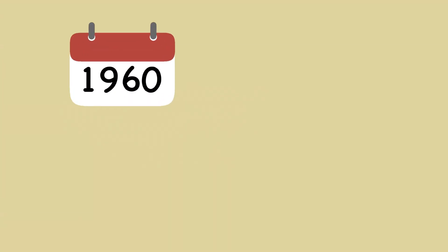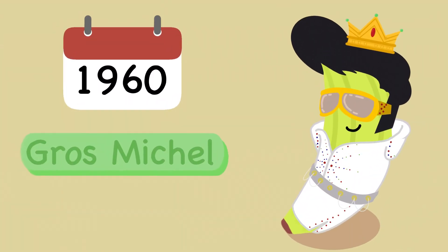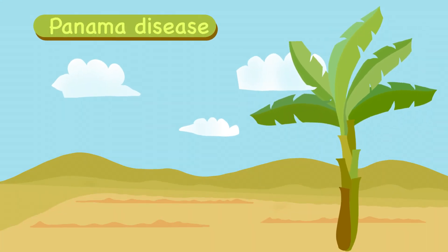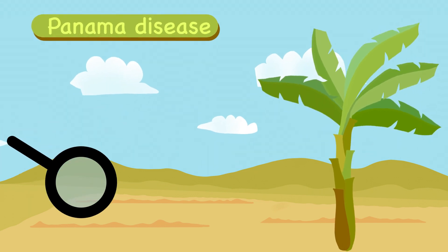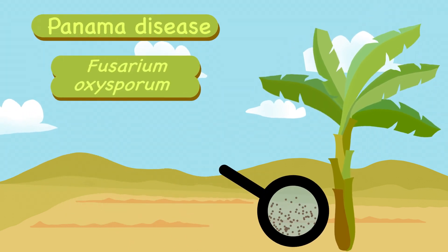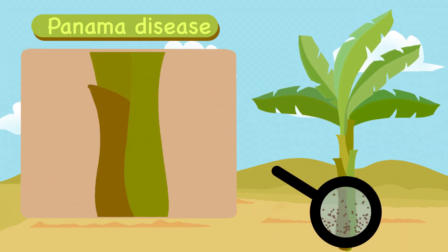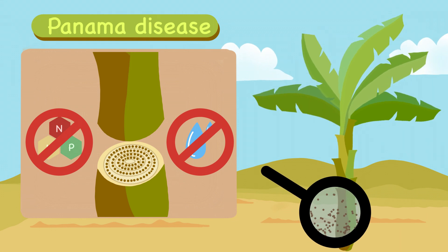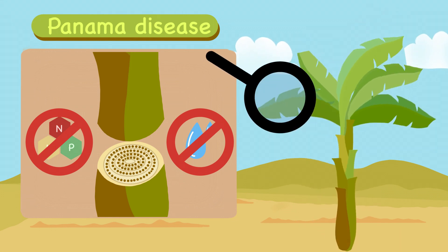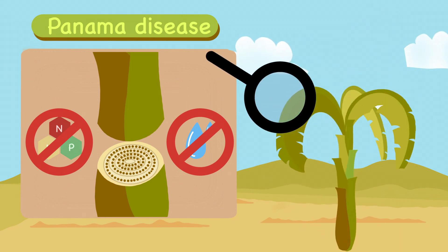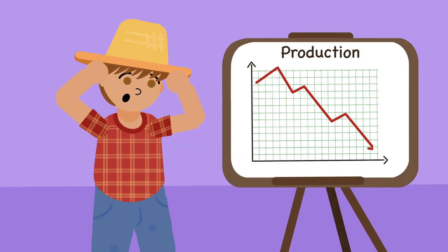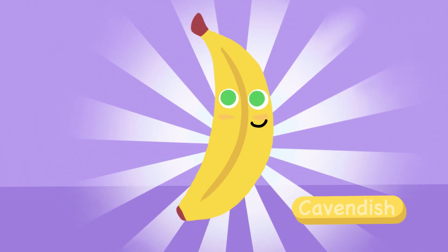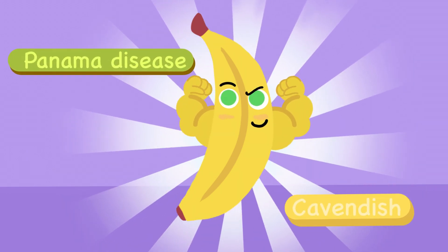Until 1960, the Gros Michel cultivar was the king of banana production. However, it was very susceptible to a disease called Panama disease, caused by a soil-borne fungus called Fusarium oxysporum. This fungus destroys the vascular system of banana plants, blocking the uptake of water and nutrients from the soil, causing leaf browning and killing the plant very quickly. As a solution, farmers switched to the Cavendish variety, which was resistant to Panama disease.